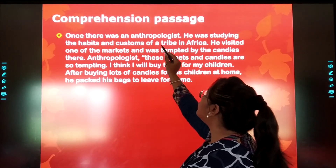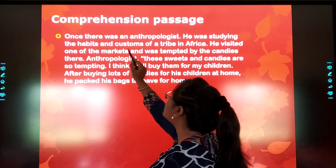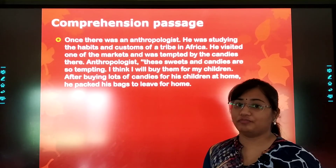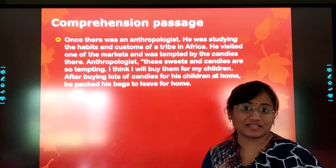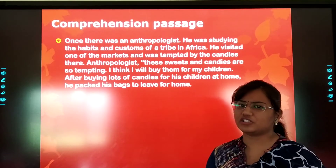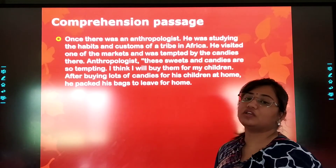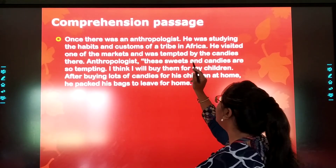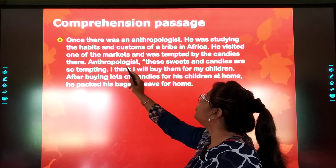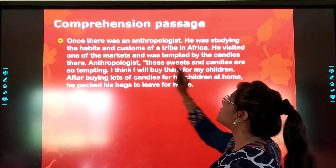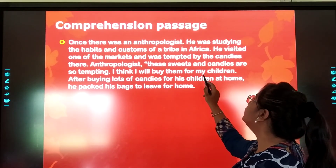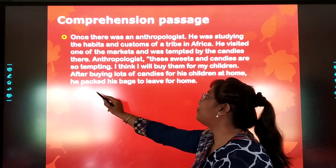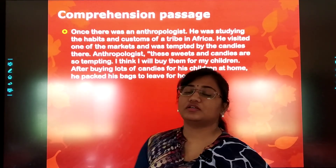Once there was an anthropologist — he was studying the habits and customs of a tribe. Tribes are a group of people who have the same language, costumes and culture. He was studying a tribe in Africa. He visited one of the markets and was tempted by the candies there. The anthropologist said, these sweets and candies are so tempting. I think I will buy them for my children. After buying lots of candies for his children at home, he packed his bags to leave for home. Do you remember this paragraph?